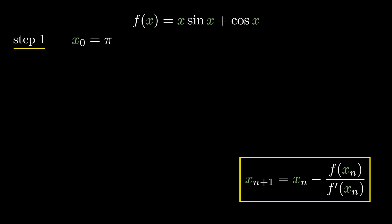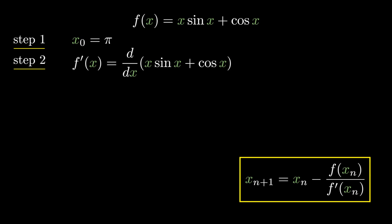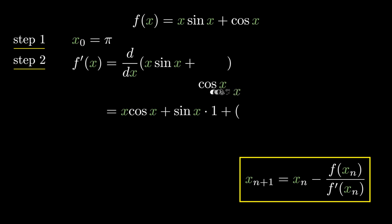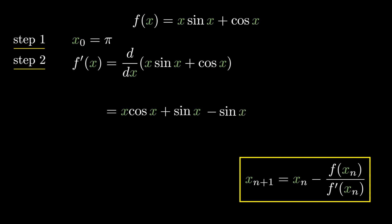To use the derivative value, we need the derivative of f(x). So in step 2, we will find f'(x). Let's differentiate: f'(x) = differentiation of x·sin(x) using the product rule: x·cos(x) + sin(x)·1, plus differentiation of cos(x) which is −sin(x). The sin(x) terms cancel, so we are left with f'(x) = x·cos(x).